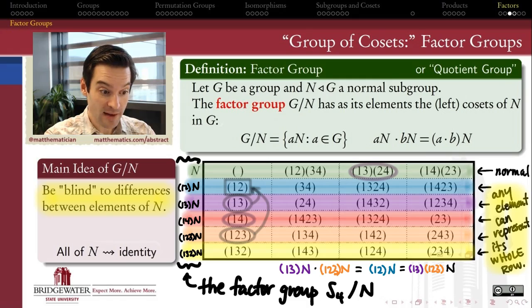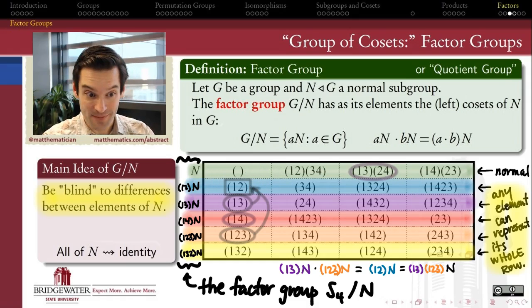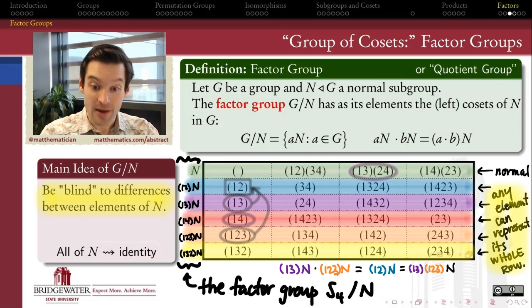And so since we're blind to all of those differences, it means that all of the elements of N are going to act in the factor group, like the identity. So the identity element in the factor group is exactly my original normal subgroup N. So all of my normal subgroup N is now getting collapsed down to just an identity element inside of the factor group.